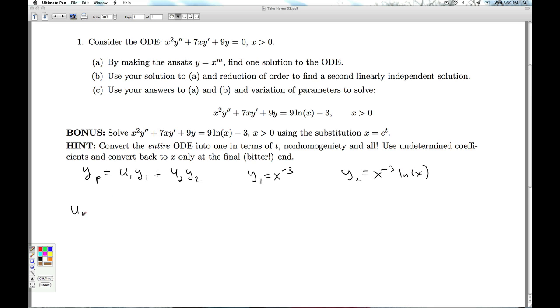If I take u1, y1, you end up getting negative 3 natural log of x squared plus 3 natural log of x minus 1. If you take u2, y2, you end up getting 3 natural log of x squared minus 2 natural log of x. And so you add these up for the yp, these guys cancel out, you're just left with natural log of x minus 1.